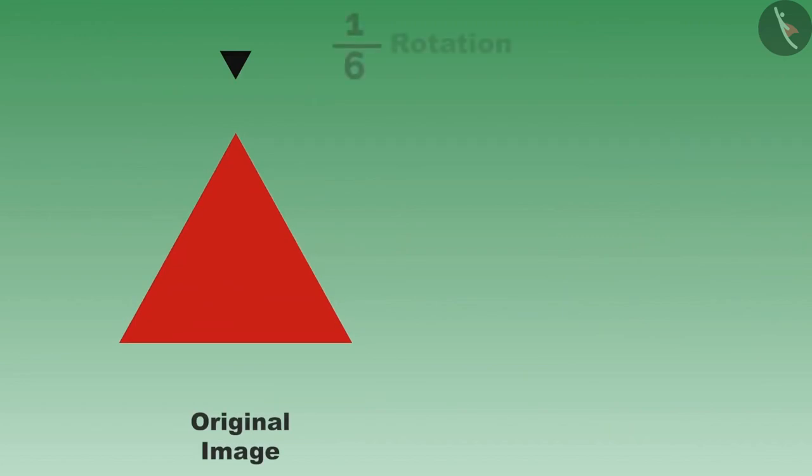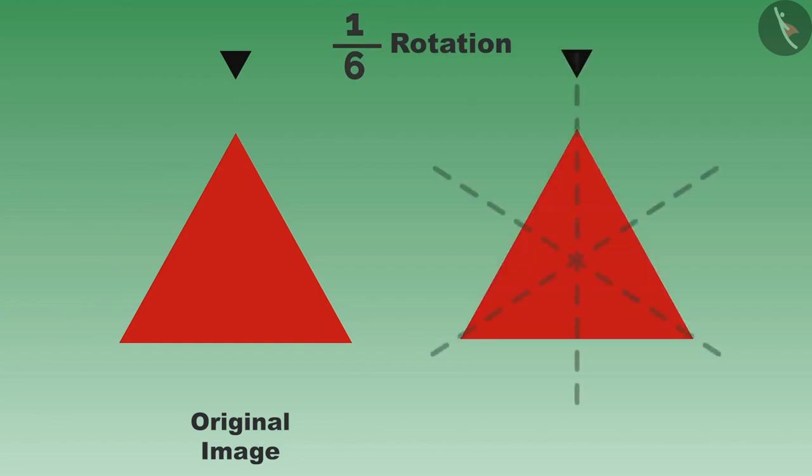In order to do this, first of all we will divide this figure into six equal parts with the help of six lines across the center. You can see that these six lines are passing through the center.